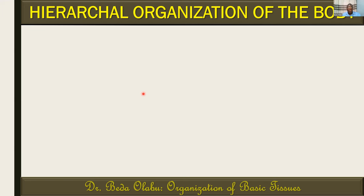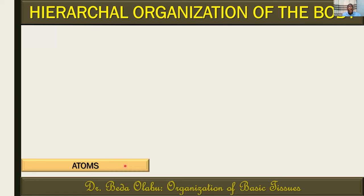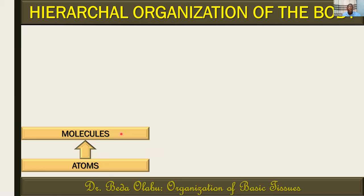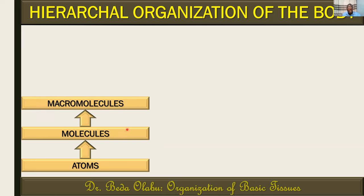Before we go into that, let's remind ourselves about the hierarchical organization of the body. We know that the body is organized in a particular hierarchy from simple to complex levels. We can start with the level of atoms, which are the smallest unit of an element that participate in chemical reactions. When atoms combine in those chemical reactions, they form molecules. Molecules are the smallest unit of an elemental compound that can exist on their own. These molecules combine to form larger molecules, which we call macromolecules.